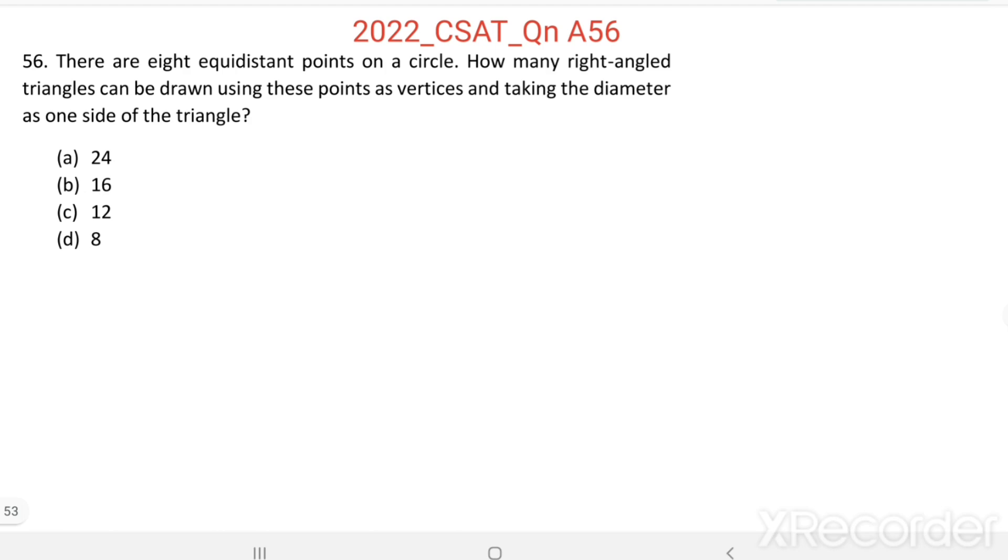So, a circle is marked by 8 equidistant points: 1, 2, 3, 4, 5, 6, 7, 8.